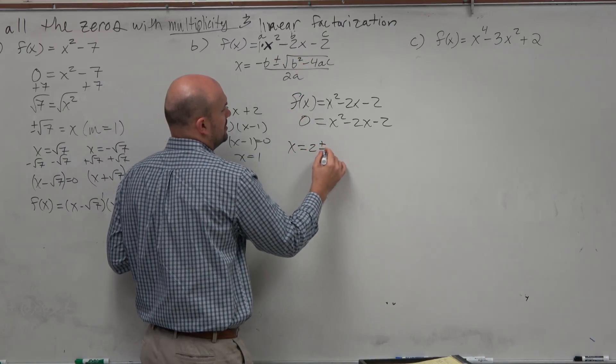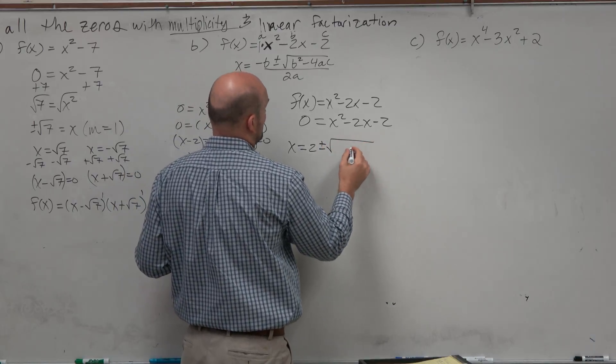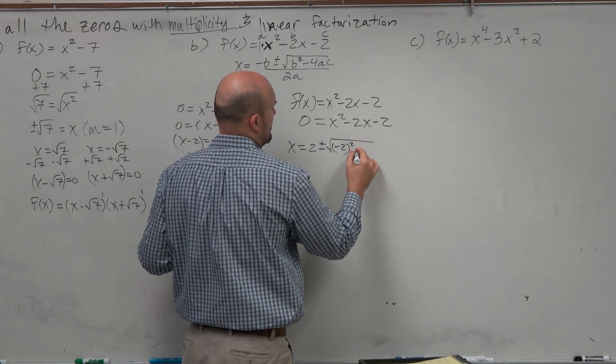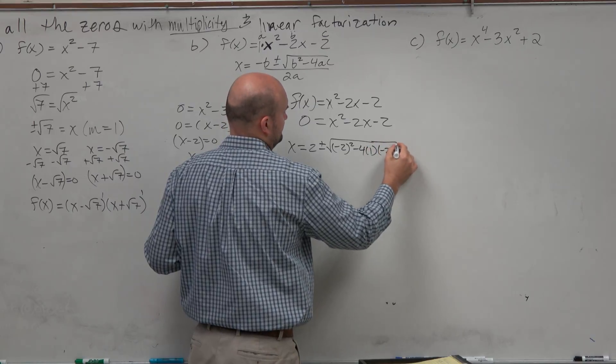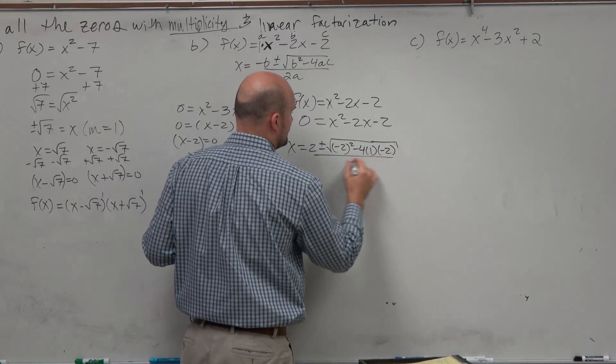Opposite of b is 2 plus or minus the square root of -2 squared minus 4 times a times c, which is -2, and that's all over 2 times a.